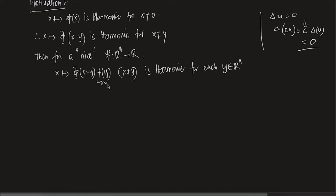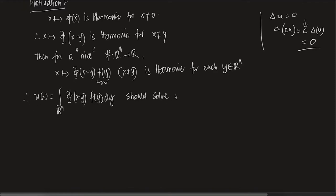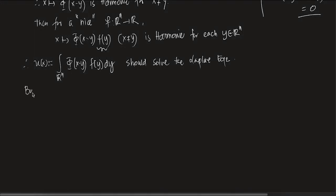Now, if I define u(x) = ∫_{ℝⁿ} φ(x − y) f(y) dy, then a priori it seems to solve the Laplace equation. But it does not. And the problem is this: the second derivative of φ at the point x − y is not summable (i.e., integrable) near x = y. There is a singularity at x = y where φ blows up.